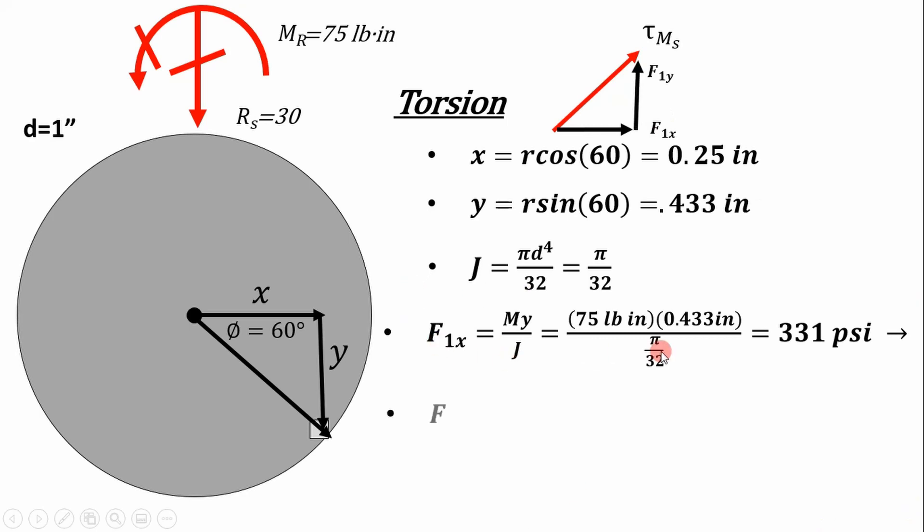So I hope that makes sense. That's why we use y, this distance right here, to calculate our x component of our shear stress. And then similarly, for the y component, you're going to do the same thing. You're going to use the x distance. And that's a really easy way to calculate the components of your torsional stress. And that's going to be 191 psi pointing up.